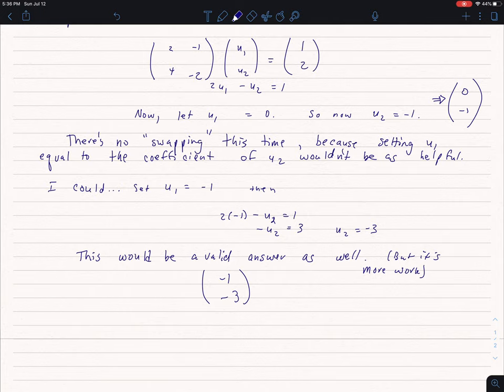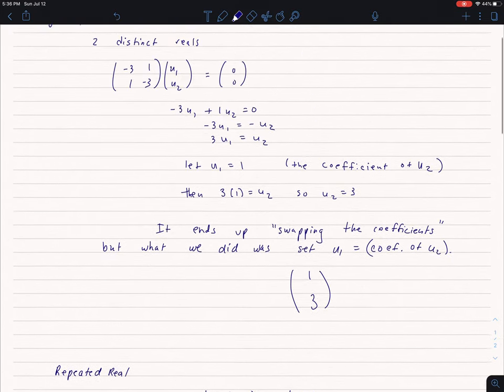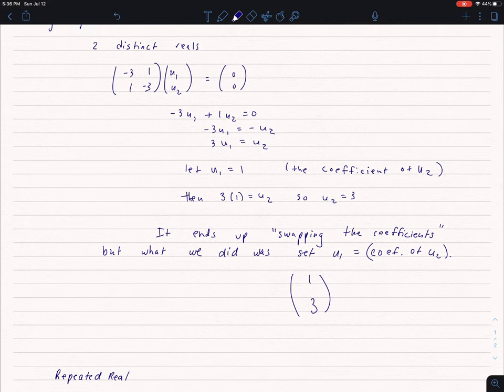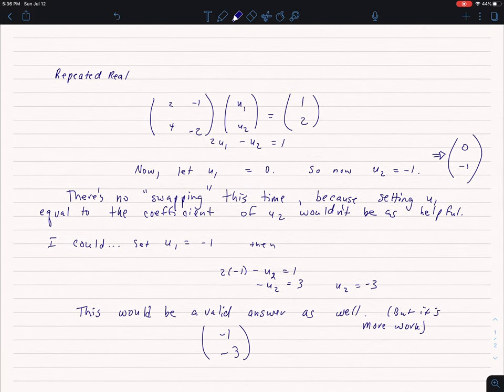That swapping of coefficients only worked when I had things equal to 0. And again, what it really was doing, not so much me swapping, but setting one equal to the other, and then it worked out that the coefficients were whatever was in front of the other eigenvector value. So hopefully that clarifies it.